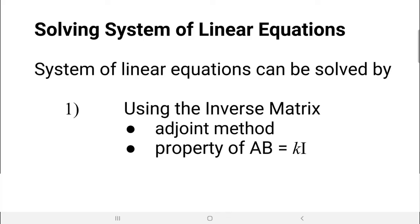Solving a system of linear equations means finding the values of all the unknowns — for example, x, y, and z for 3 unknowns, or x and y for 2 unknowns. There are 2 methods: the first is using the inverse matrix, either by the adjoint method or by using the property AB equals KI.